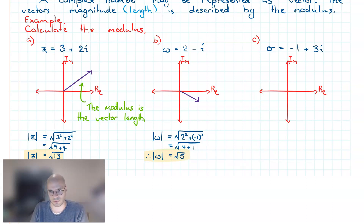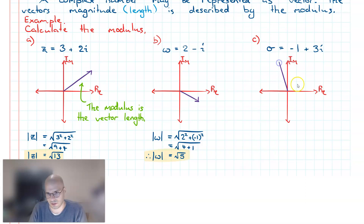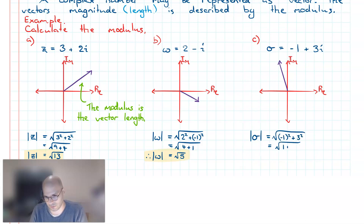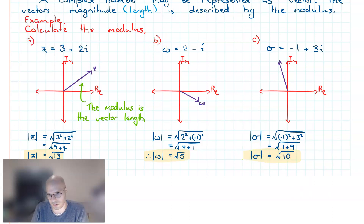The final example: Sigma equals negative 1 plus 3i. Representing this as a vector, I go to negative 1 on the real axis and then up 3 on the imaginary axis. Calculating the modulus, I take the absolute value of Sigma using Pythagoras's theorem — negative 1 squared plus 3 squared — giving a modulus of root 10.